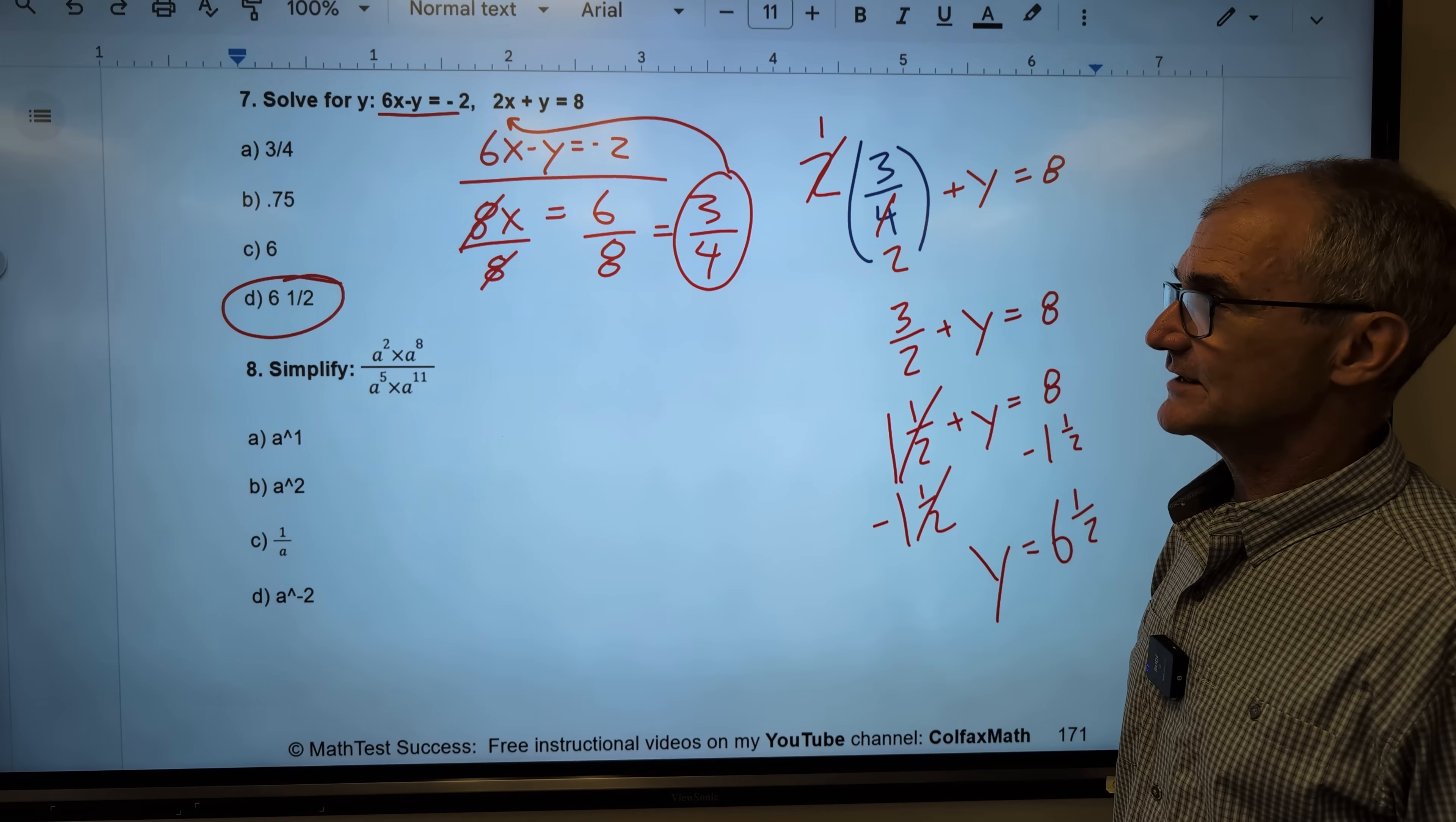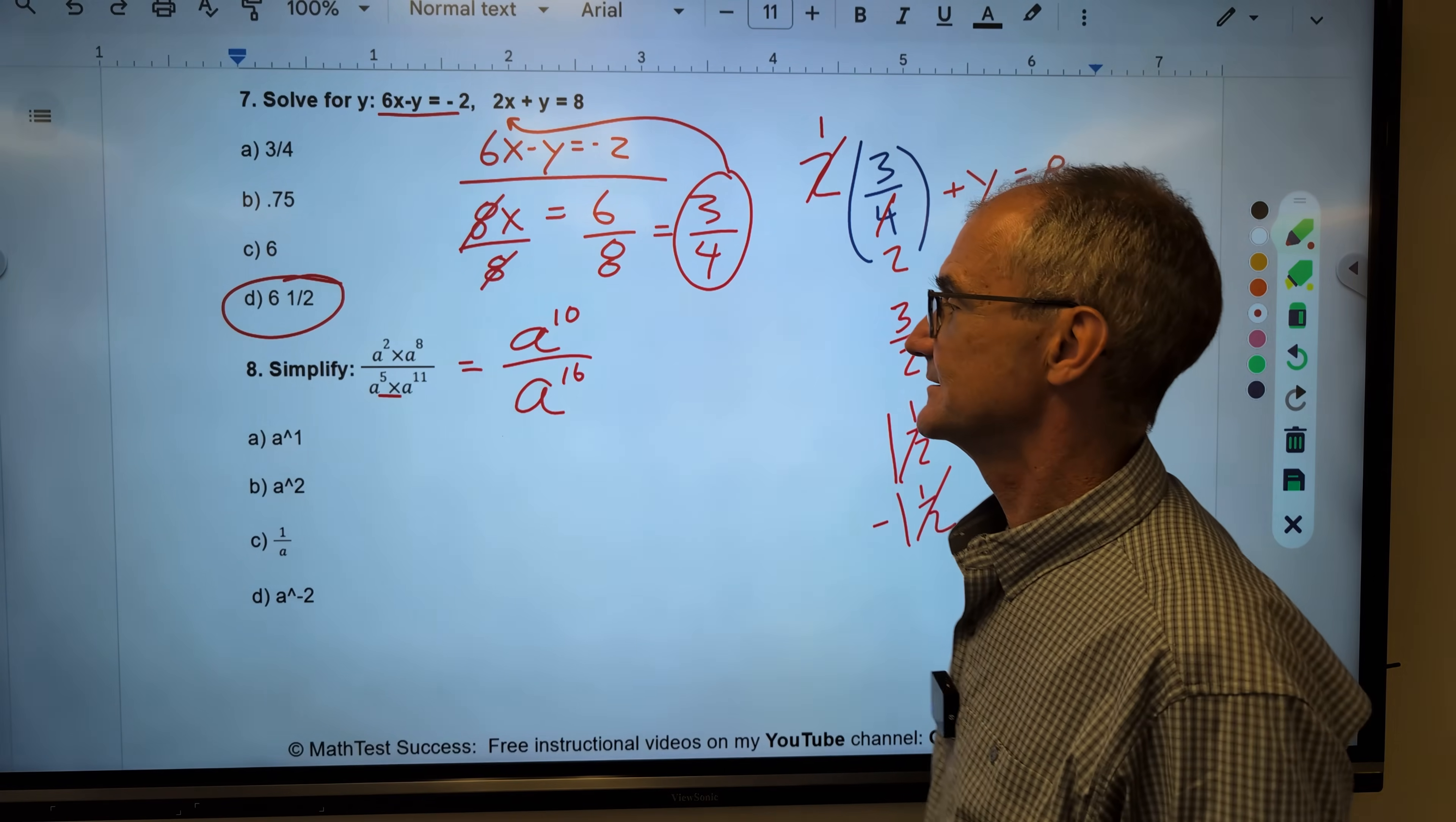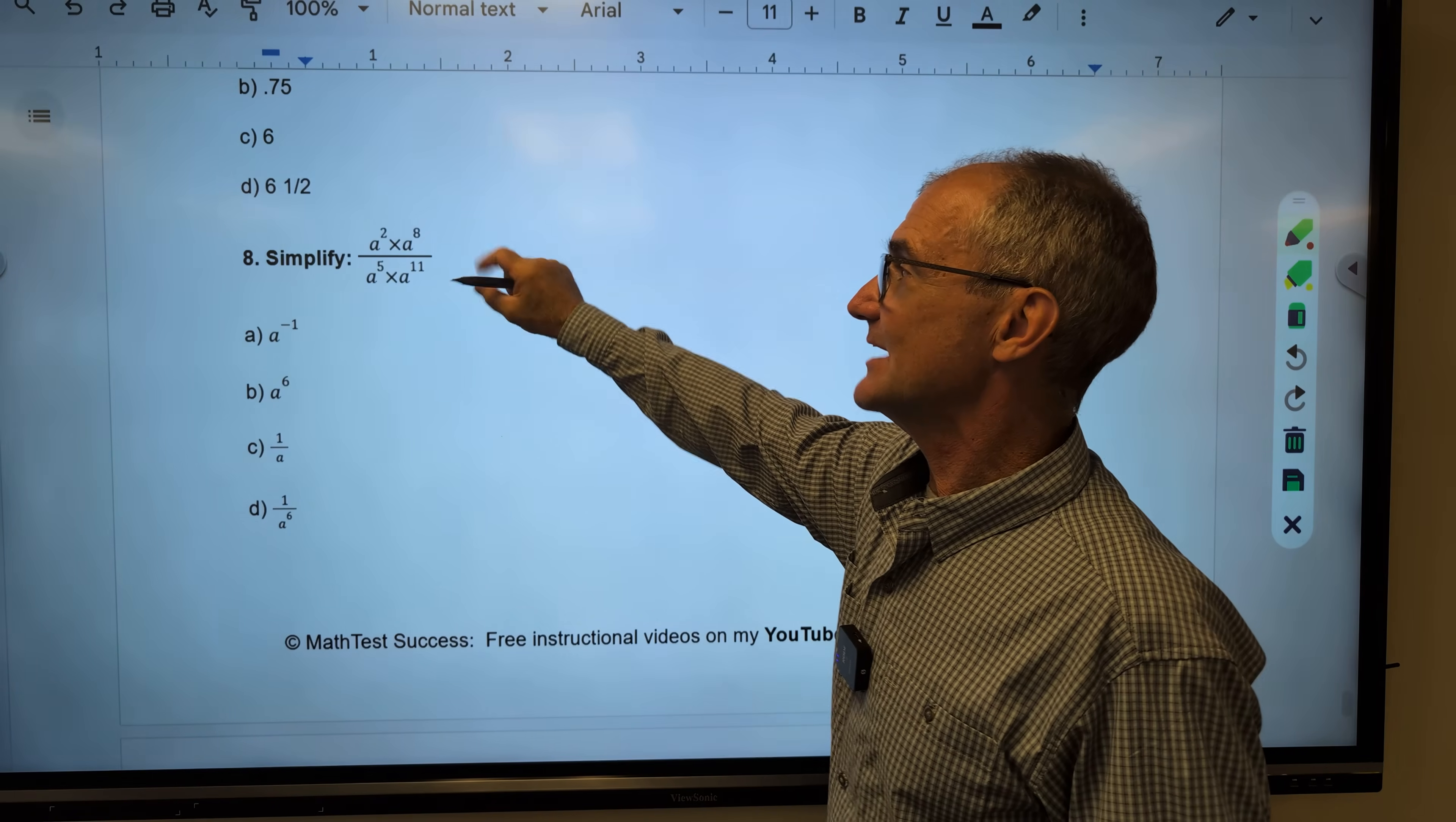Number 8 is laws of exponents. Remember that in the last test and there's a chapter on it as well. Now, when I have the bases are the same, then I add the exponents. So that gives me a to the 2 plus 8, 10. On the denominator here, bases are the same. I add to get a to the 16th. Now I need to subtract. That is going to give me a to the negative 6th. Okay, number 8, we talked about laws of exponents. When I multiply and the bases are the same, I add. When I divide, I subtract. So let's go ahead and do this one.